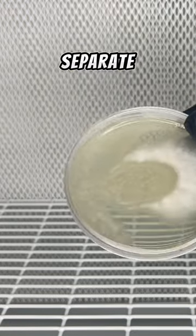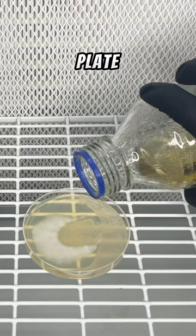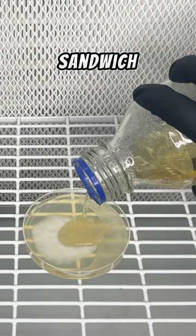One of the best ways to separate bacterial contamination from mushroom mycelium on an agar plate is to use the agar sandwich method.